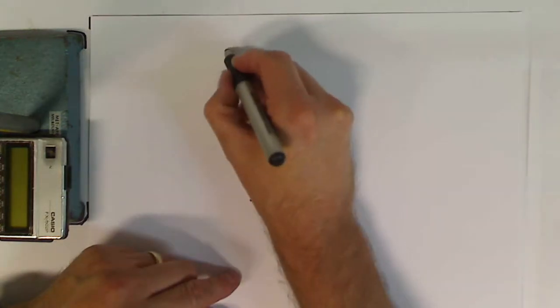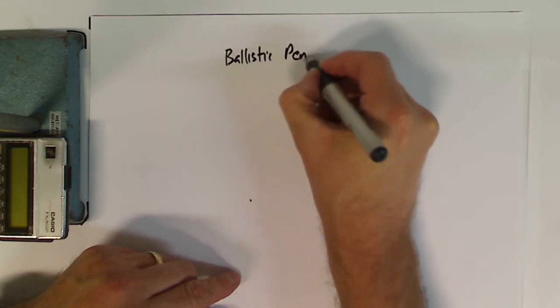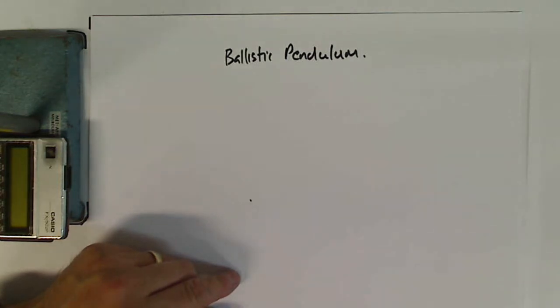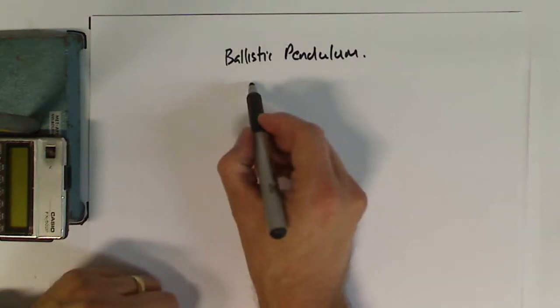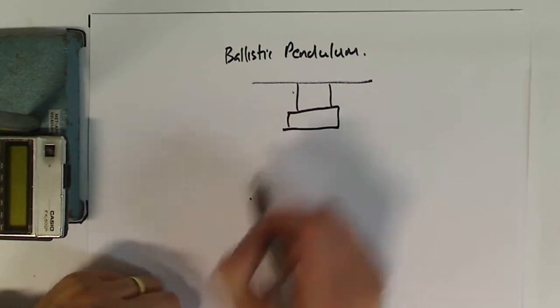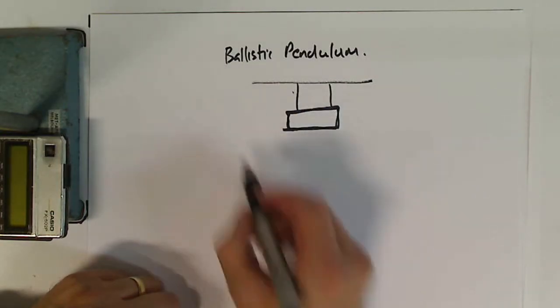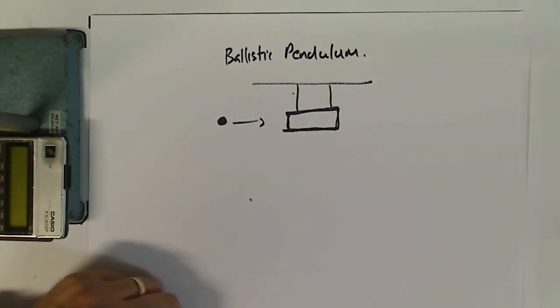Okay, what we're going to do now is have a look at something called the ballistic pendulum. This is something where we're going to use a block that is suspended by a couple of little strings. We're going to shoot a bullet at that block.